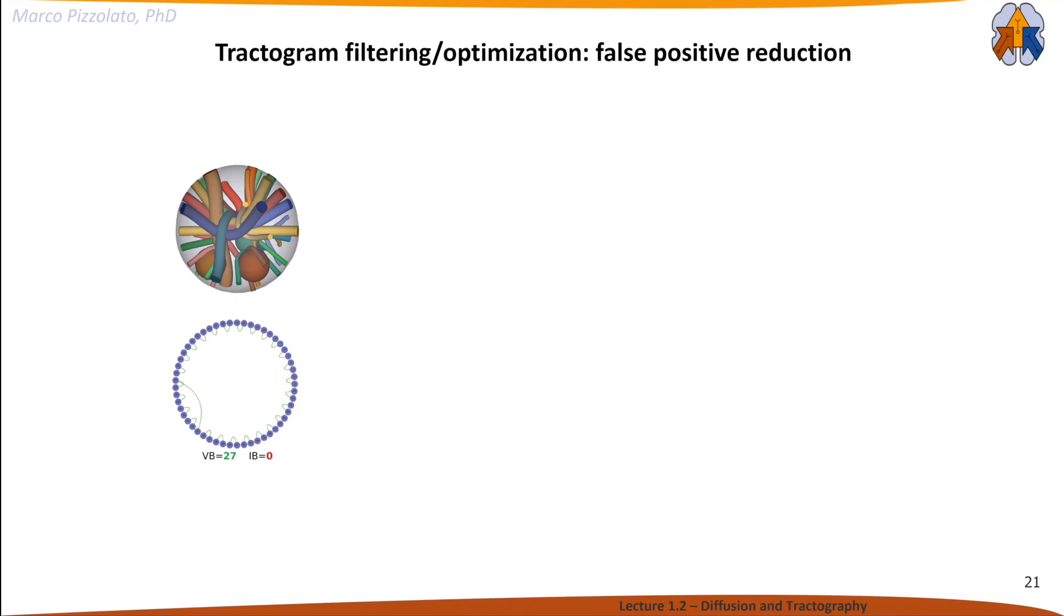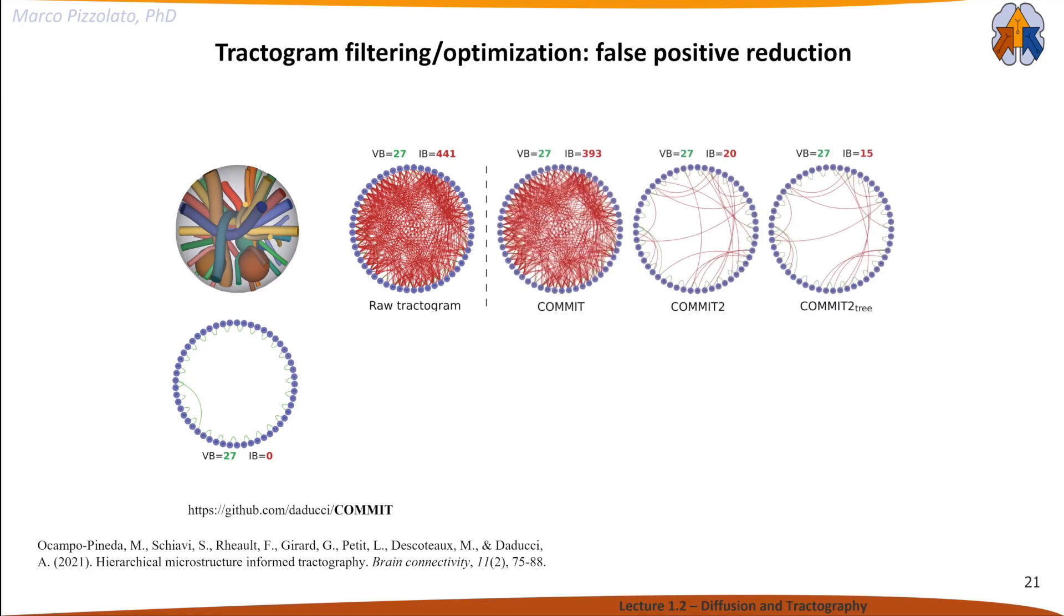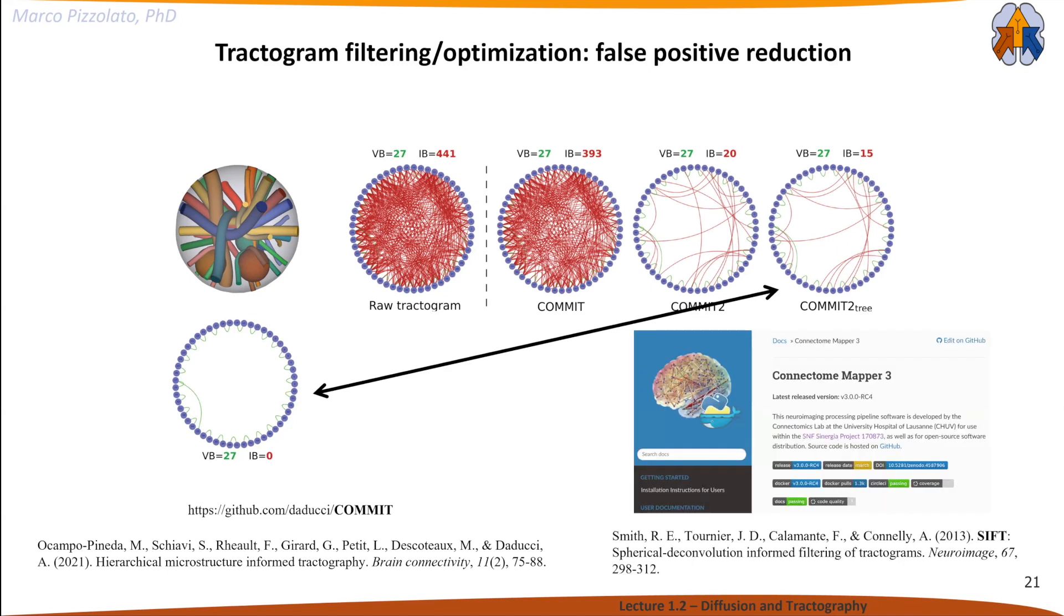There are strategies to deal with that, called tractogram filtering, optimization, or false positive reduction. Here's a simulated phantom with many connections—green lines between dots, which are seeding regions. We have 27 true valid bundles, but tractography typically finds about 440 invalid bundles. There are strategies to prune the connections to find only the valid ones. Connectome Mapper implements a similar approach, so you can use these tractogram filtering options.